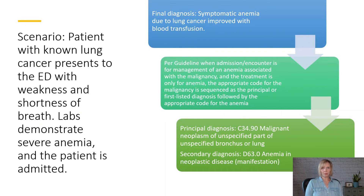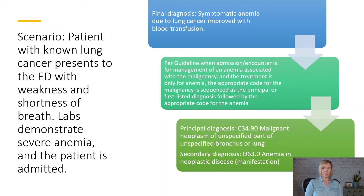Let's take a look at an example. In this scenario, a patient with known lung cancer presents to the ED with weakness and shortness of breath. Labs demonstrate severe anemia and the patient is admitted. The final diagnostic impression is symptomatic anemia due to lung cancer, improved with blood transfusion. In this case, even though the admission was specifically for treatment of the anemia and nothing was done for the malignancy, the malignancy will be sequenced as the principal diagnosis because the guideline and instructional note give us specific guidance to do so. The code for the anemia in neoplastic disease is sequenced as a secondary diagnosis.